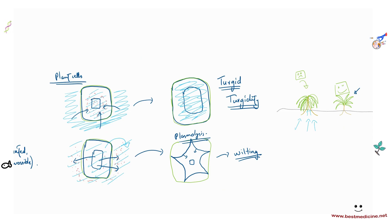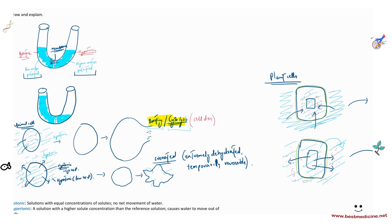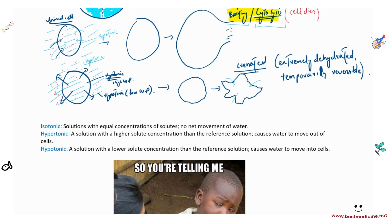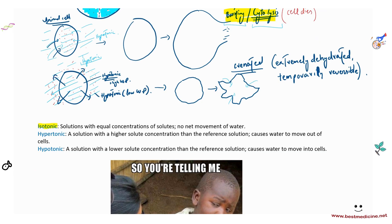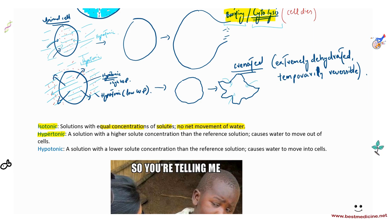To summarize key terms: isotonic solutions have equal concentrations of solutes on both sides, resulting in no net movement of water and no net osmosis. Hypertonic means high solute concentration and low water potential. Hypotonic means lower solute concentration and higher water potential, causing water to move into cells.